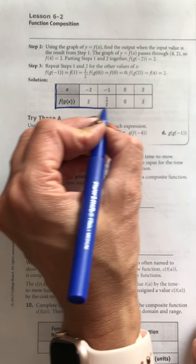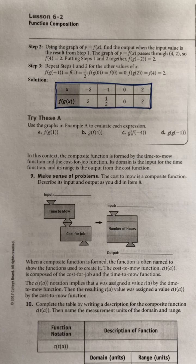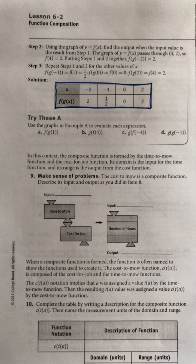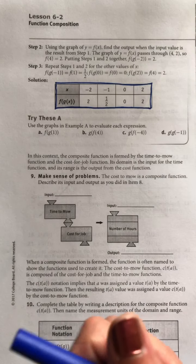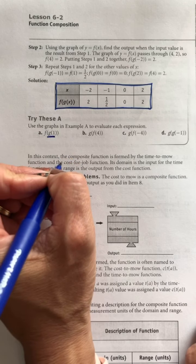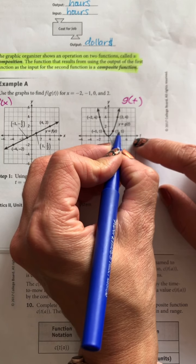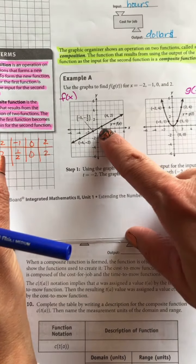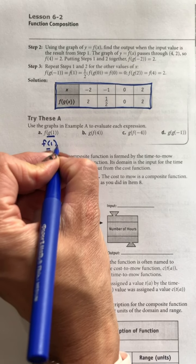That table matches exactly what we just wrote down — we found the f of g of x values by plugging one function into the other. Now using those same graphs to evaluate individual expressions: f of g of one. Start by finding g of one — the output is one. So this becomes f of one. And f of positive one equals one half.